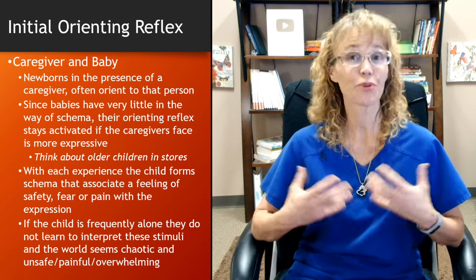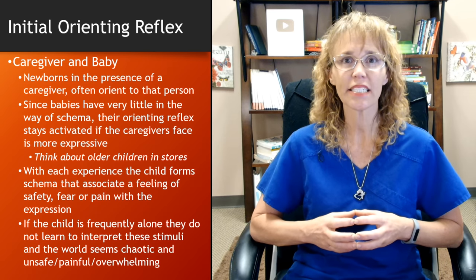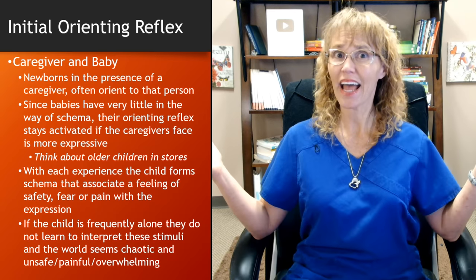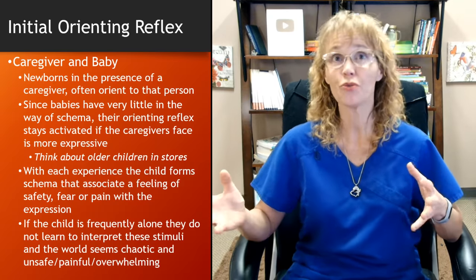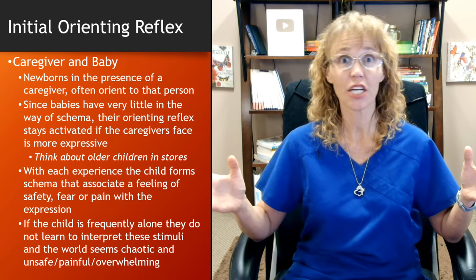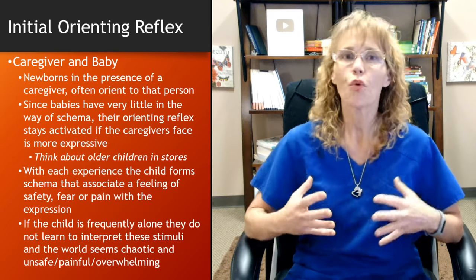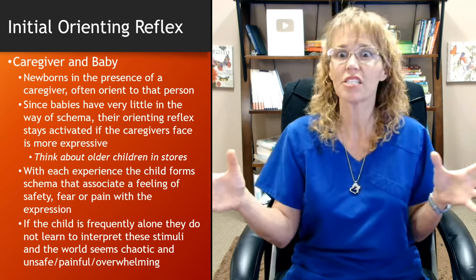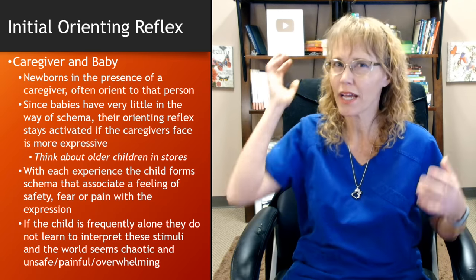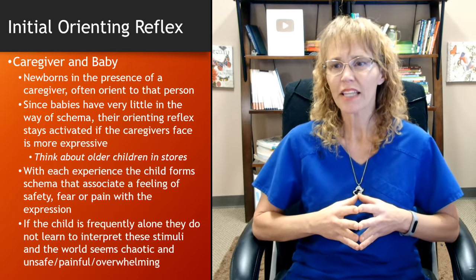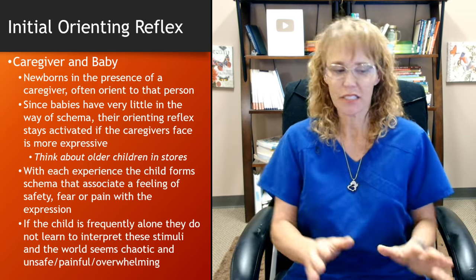Initially our orienting reflex presents when we're infants, between the caregiver and the baby. Newborns in the presence of a caregiver often orient to that person. Think about it — a newborn comes out and has never experienced any of this before, so everything is new: new sensations, new stimuli. They are orienting all over the place. A lot of times if you've been around little kids, you talk about them like sponges — they just absorb everything — because that orienting reflex keeps noticing all this new stuff. Since babies have little in the way of schema, they don't have those shortcuts in their brain, so their orienting reflex stays activated, especially if the caregiver's face is more expressive.